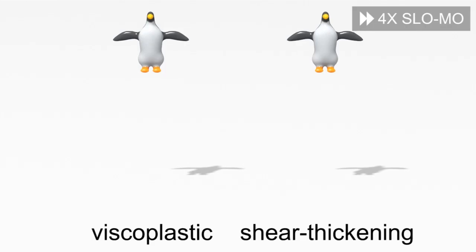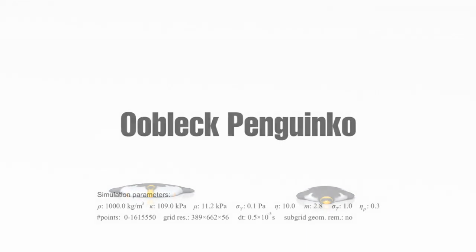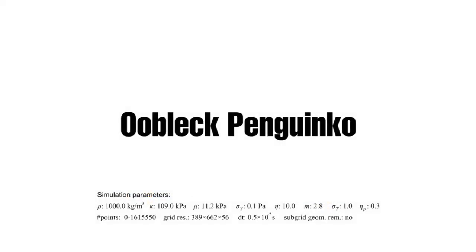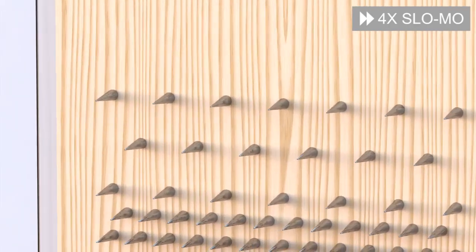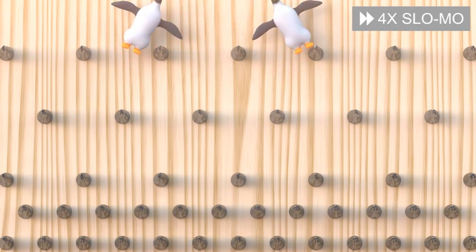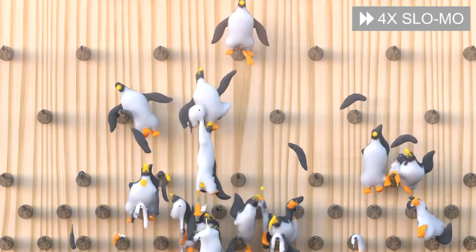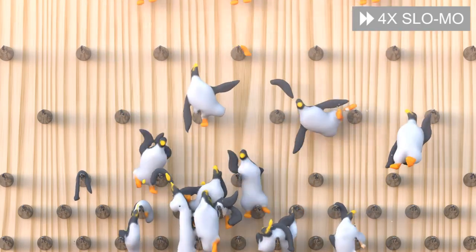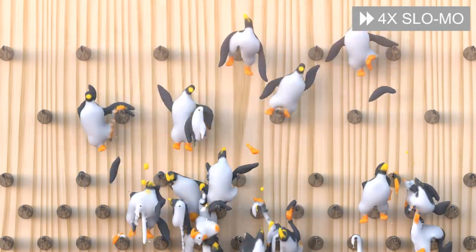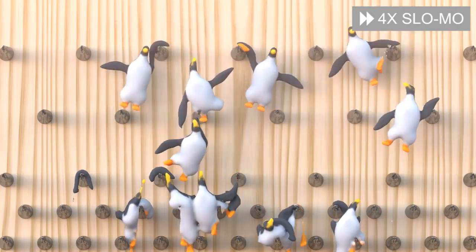Instead of spheres, we can use the same materials to simulate penguin-shaped geometry. Next, we use the same shear thickening Oobleck material to simulate a pachinko machine with falling penguins. Due to shear thickening, the rapidly falling penguins initially bounce off the pachinko pins, with only an occasional wing or foot detaching from the bodies. As the penguins are slowed by collisions with the pins, they experience lower stresses and thus begin to flow and lose their shape.